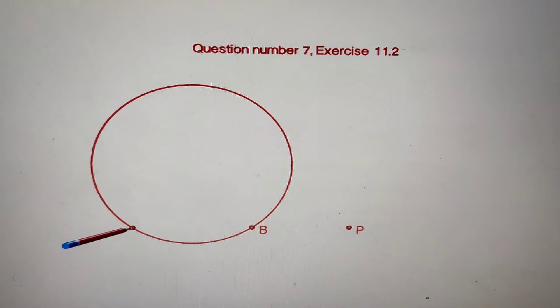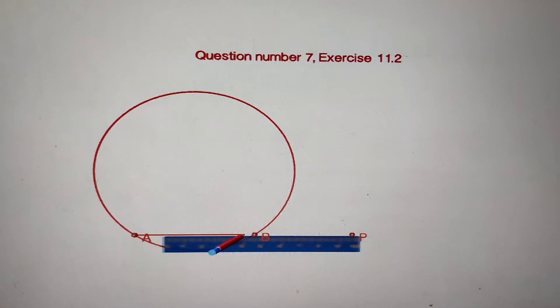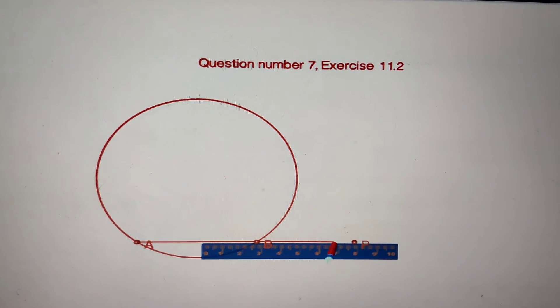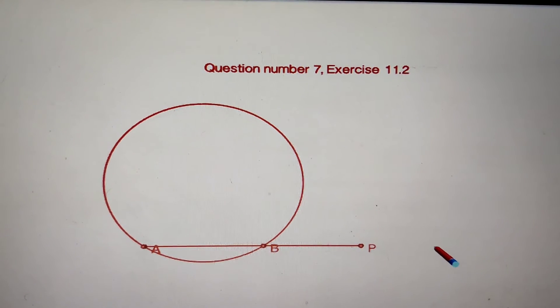Make a secant, a straight line passing through the circle. We have to draw the tangents from this point P to the circle.